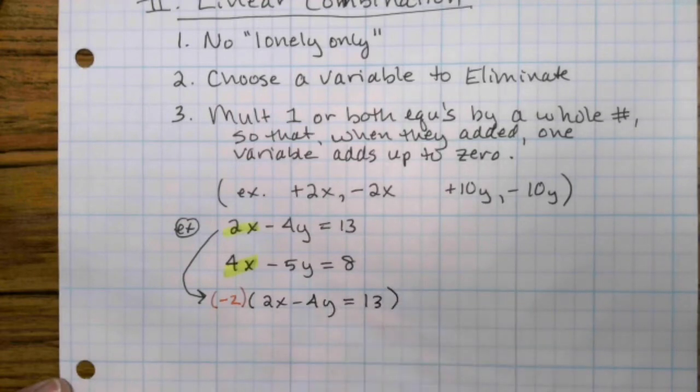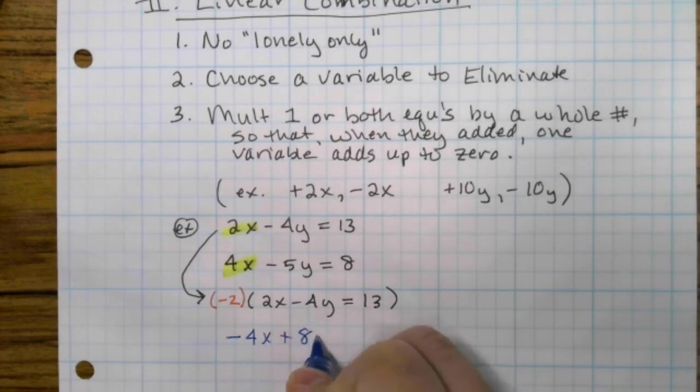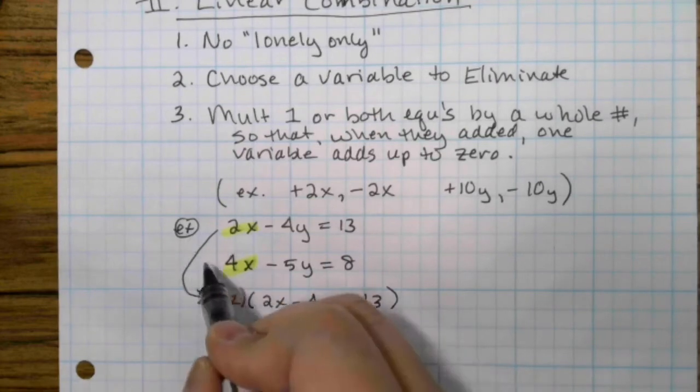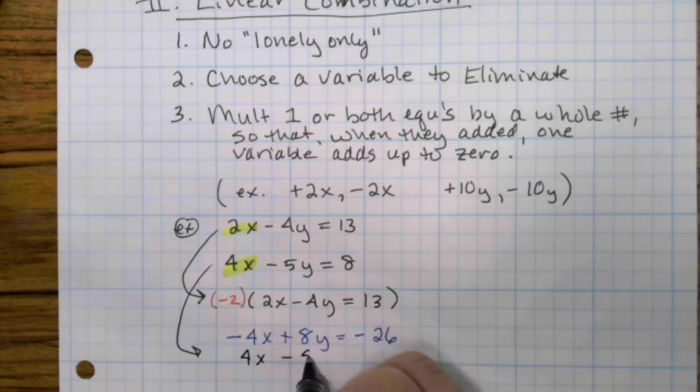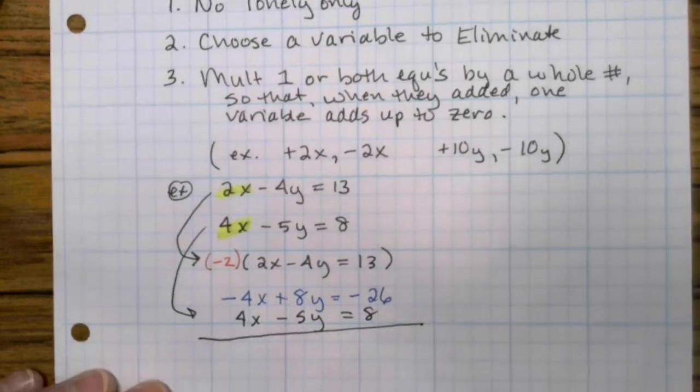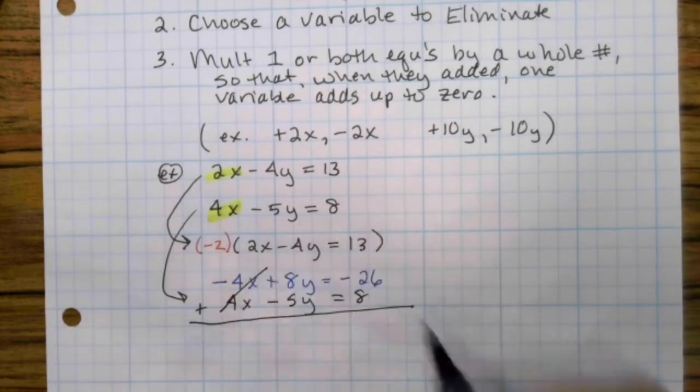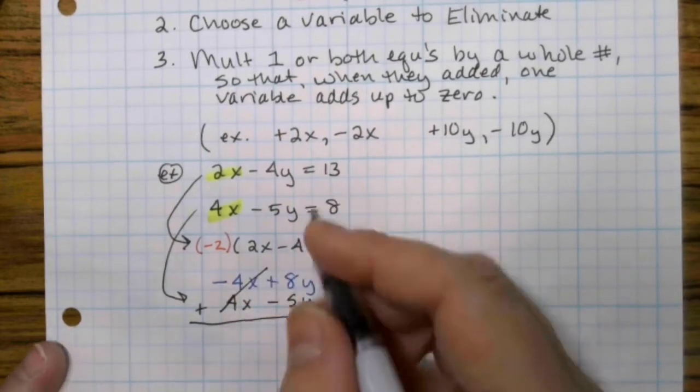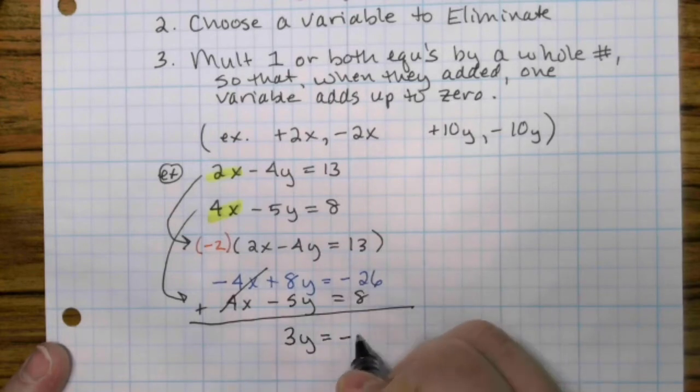So it's going to be negative 2 times that top equation. Don't forget the right hand side. So when we do that, our new equation is negative 4x plus 8y equals negative 26. So now we're going to take the first equation. Just recopy it, not change it. So 4x minus 5y equals 8. And this is where the linear combination happens. We're going to add this up. Negative 4 plus 4 is zero. That variable is gone. 8 minus 5 is 3y. Negative 26 plus 8 is a negative 18.